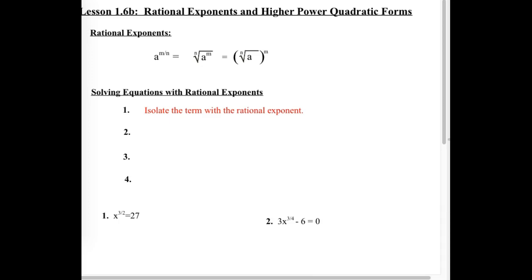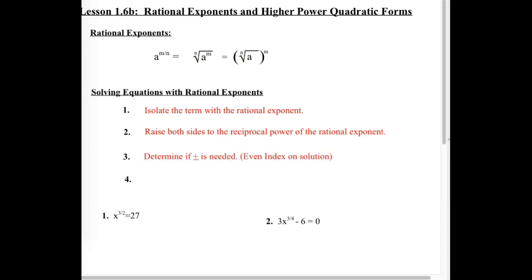First step: we are going to isolate the term that has the rational exponent — very similar to yesterday when we tried to isolate that square root symbol. Second step: to undo a square root, we squared it; well, to undo a fraction power, we're going to raise it to the reciprocal power. Third step: decide whether we need a positive or negative, which happens when we're taking some kind of even root. Last step, like yesterday, is to check those solutions.